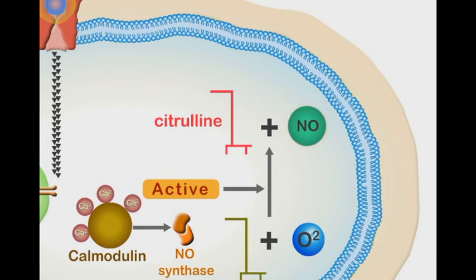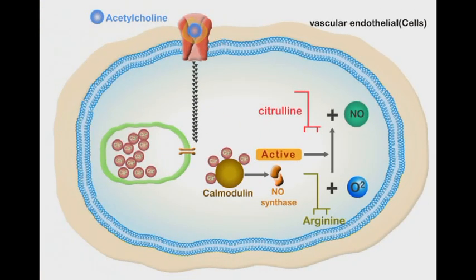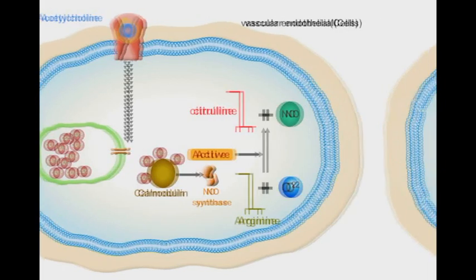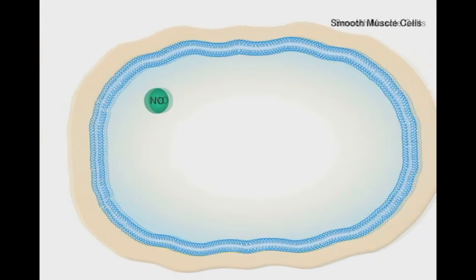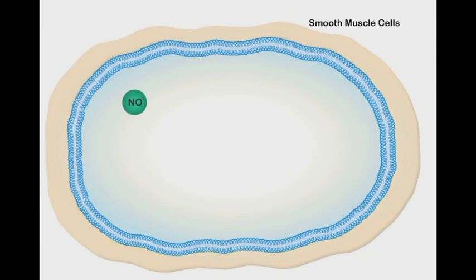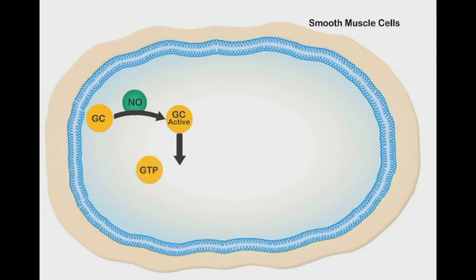To exert its vasodilatory effects, the newly produced nitric oxide molecules diffuse into the nearby smooth muscle cells. In the smooth muscle cells, nitric oxide triggers a cascade of reactions starting with activation of a guanylyl cyclase enzyme. Active guanylyl cyclase in turn activates the conversion of GTP into its active form, cyclic GMP.